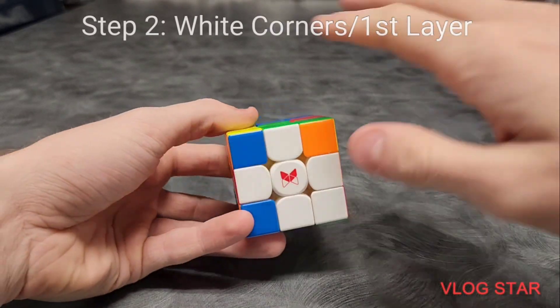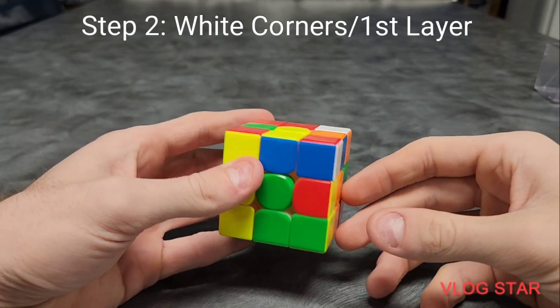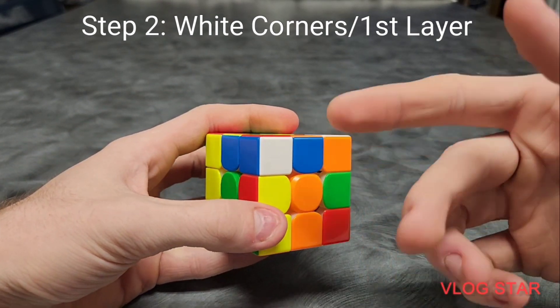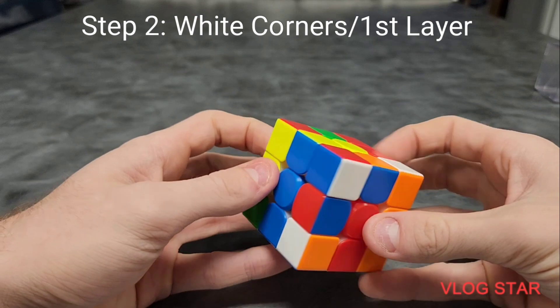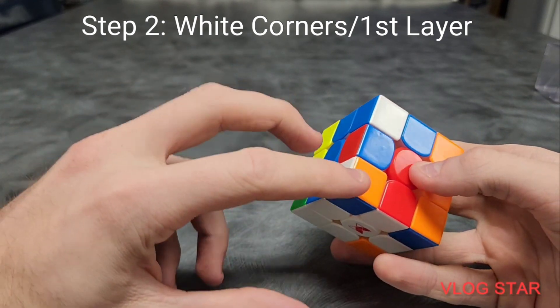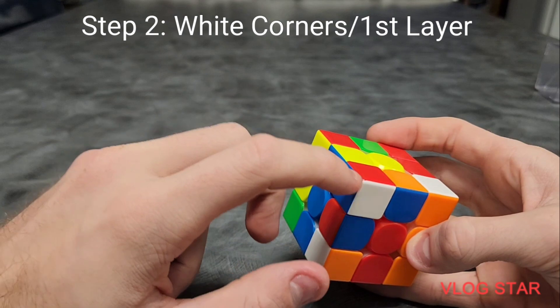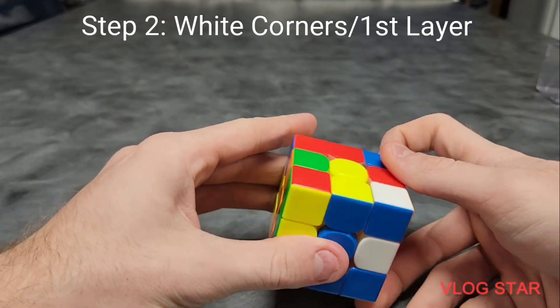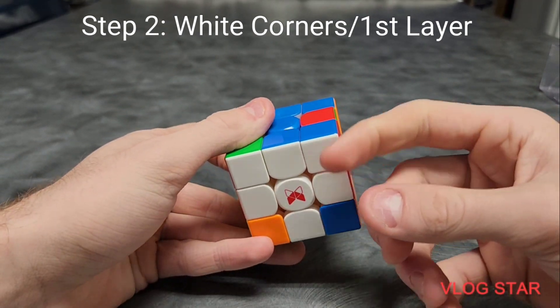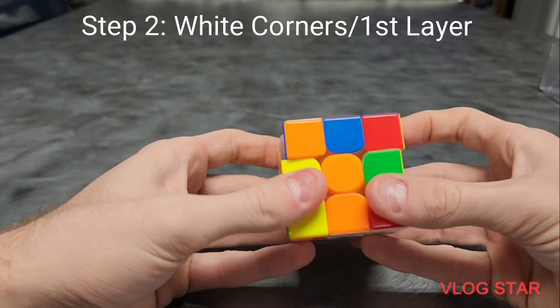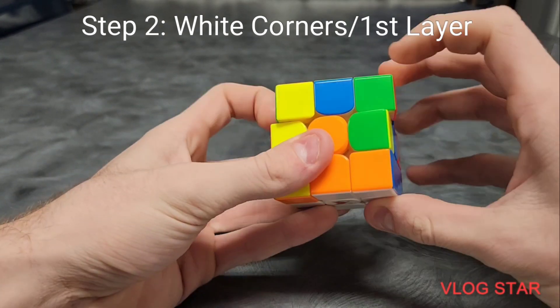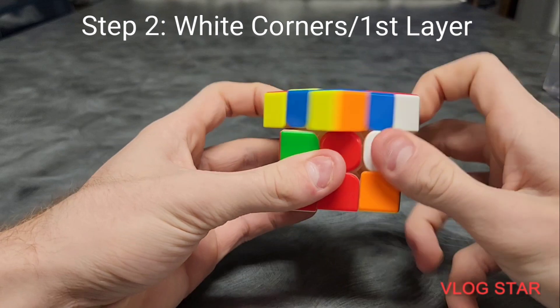The next step is to complete the white face, which we will do by putting the corner pieces into the right spots. You can do this by using algorithm 1. Take the corner piece you are solving and put it in the corner spot above the spot it's going to go. Then use algorithm 1 over and over until the white is on the same side as the white center, and the other two colors should also be on the correct sides as well. Do this over and over until the white corners in the first layer are solved.